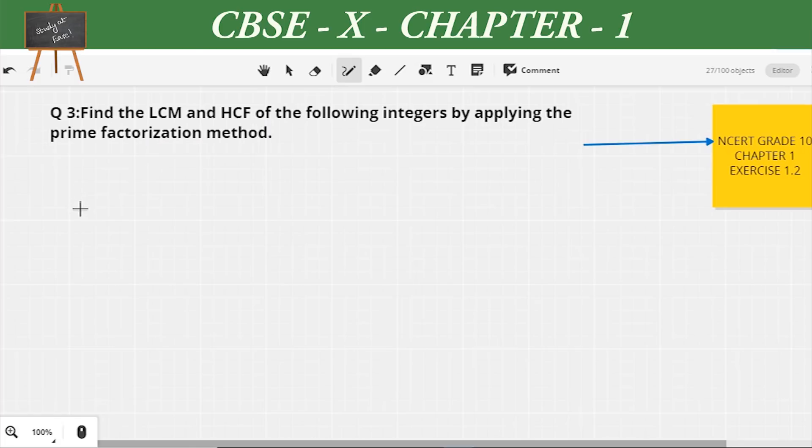Let us look at the third question: Find the LCM and HCF of the following integers by applying the prime factorization method. This is also from NCERT Grade 10 Chapter 1 Exercise 1.2. The first question is 12, 15, and 21. So 12 = 2 × 2 × 3, 15 = 3 × 5, and 21 = 3 × 7. In all three numbers you will see that 3 is common. That means the HCF of 12, 15, and 21 is equal to 3.